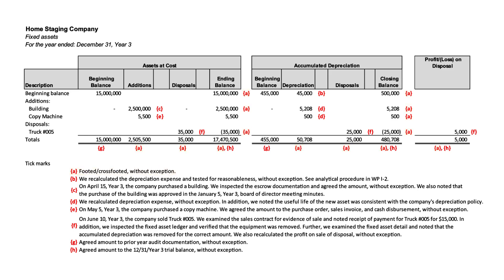Some might look at that and say, why isn't there an A for the beginning balance column? Well, remember, we would have checked the math last year. So as long as we're tying it back to last year's audit, we don't really need to reiterate that we checked the math again this year in work paper I-2.